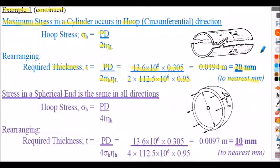Mathematically we would round 19.4 down to 19 mm, but in context if we use 19 mm we would exceed the working stress calculated. So we must round up to 20 mm to the nearest millimetre.